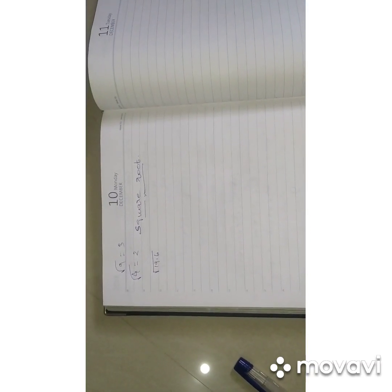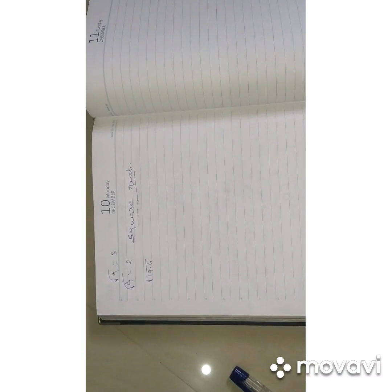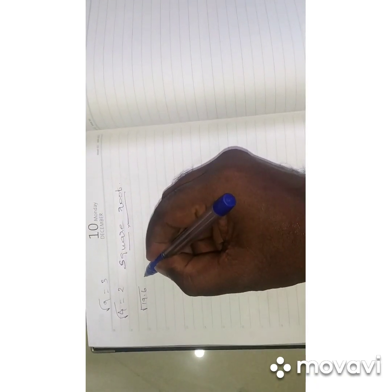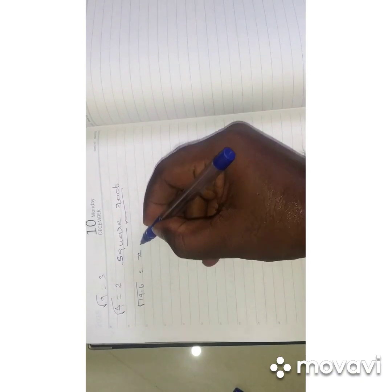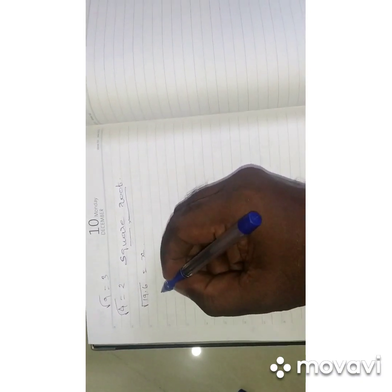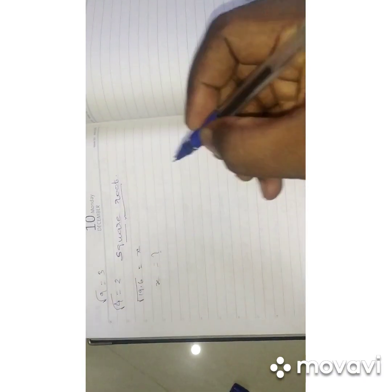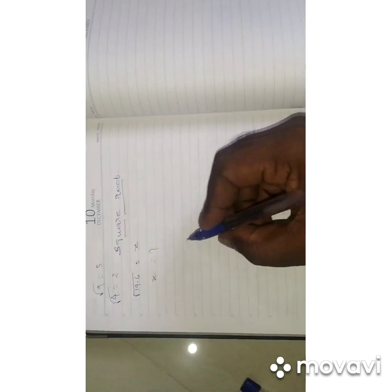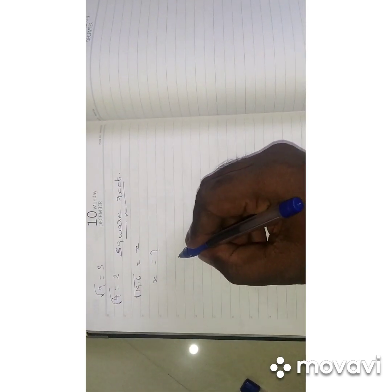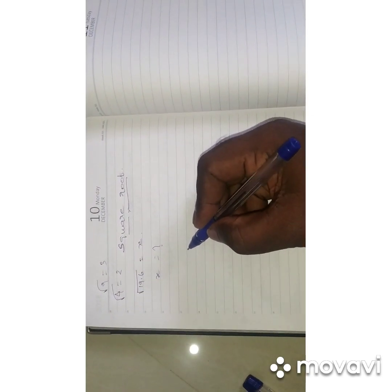We are going to start with the direct answer. We can start with the square root of 4. The square root of the value is equal to x. We will start with 2 methods: this is the prime factor method and the long division method.